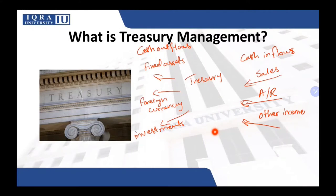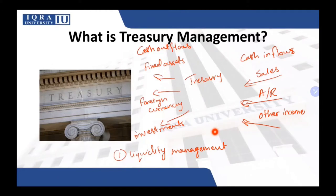Treasury management deals with two main broad aspects. The first is liquidity management — the business should be liquid and have enough cash to make sure that payments are made on time, because if that does not happen, the company is going to go into financial distress. The company should always have money to pay suppliers at the right time, but if they have too much cash, they are not utilizing their assets properly. So there should be a balance.